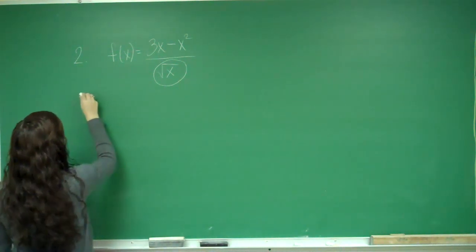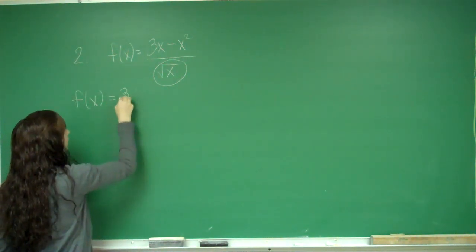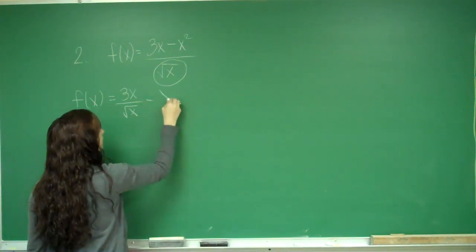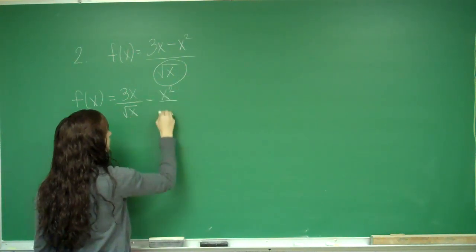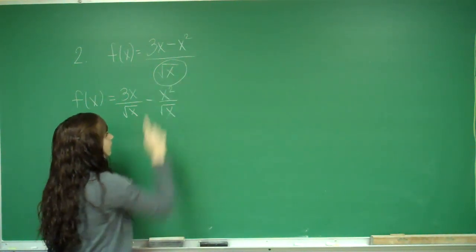I'm going to rewrite f of x as 3x over the square root of x minus x squared over the square root of x. And remember, you can only do this if there's one term on the bottom.